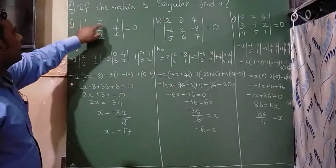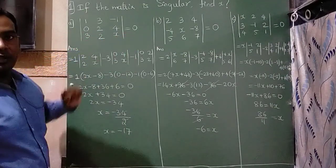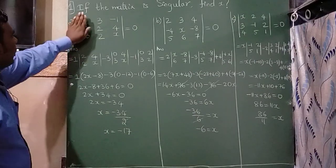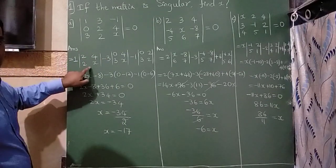The first sum is: matrix 1, 3, -1, 0, 2, 4, 3, 2, x equals 0. This one I have written here. If you close the column and the row, what do you see? 2, 4, 2, x I have written here.